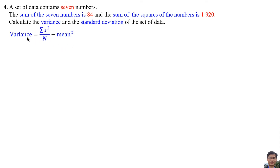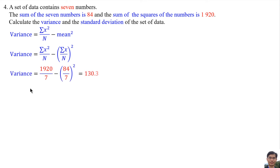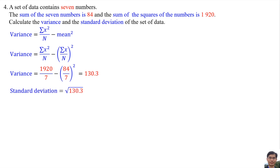This is the formula for variance, and this is the formula for the mean. The variance equals the summation of x squared divided by n, minus the mean squared. The sum of the squares of the numbers is 1920, n is the total number of data which is 7, and the sum of the 7 numbers is 84. So the variance equals 130.3. The standard deviation is the square root of the variance — square root of 130.3 — which equals 11.41.